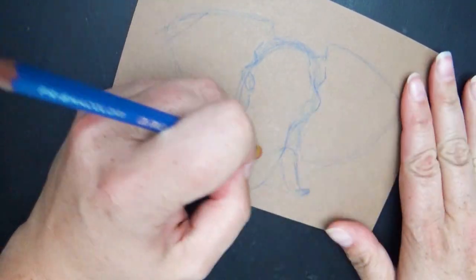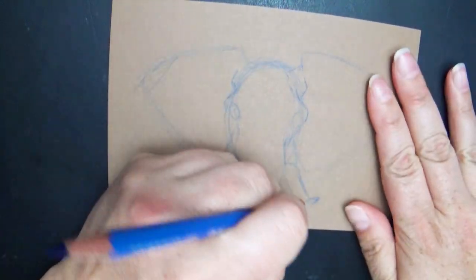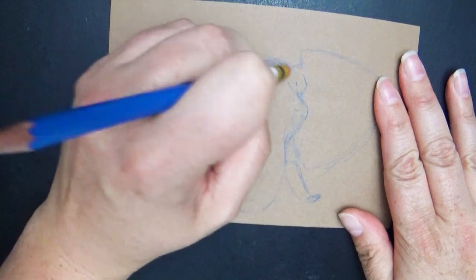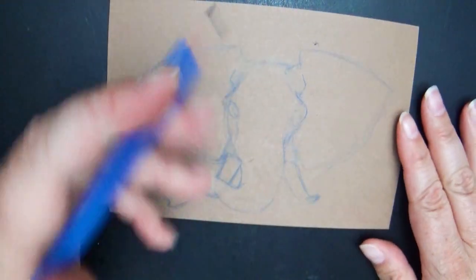Once you have the initial rough sketch out I usually go over and kind of tighten up any lines or fix anything. Sometimes I'll hold the picture back away from me a little bit. It kind of gives a different perspective.